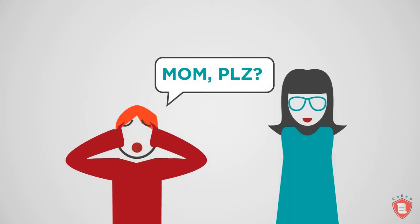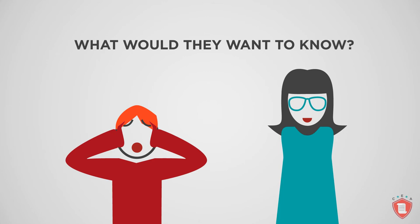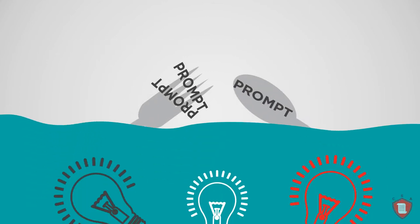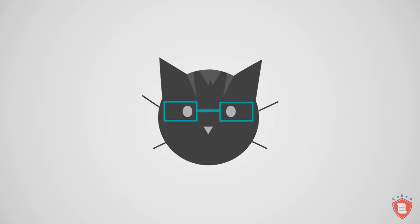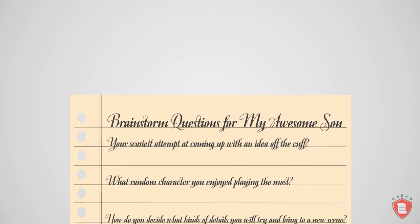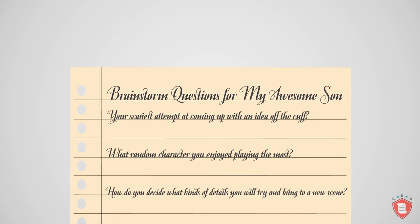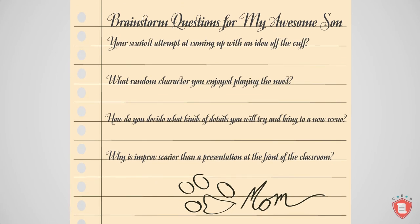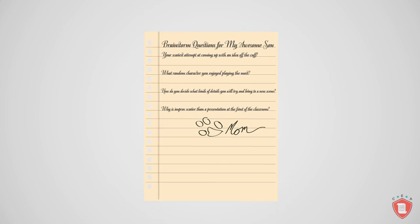Ask for questions. Tell a close friend or family member you trust about your topic and ask him or her to assign you a set of quick interview questions. If this person read an essay about your topic written by you, what would they want to know? Free writing in response to bite-sized prompts is a great way to inspire a new flood of ideas and break through initial free writing trepidation. Make sure to request that whoever asks these questions challenges you to dig for details. You are trying to tell a vivid story that stays interesting for the length of an entire essay. If, for example, you're Grayson writing about your journey through the intimidating world of improv comedy, maybe your mom will ask you about your scariest attempt at coming up with an idea off the cuff. Perhaps she'll ask you what random character you enjoyed playing the most and how you decide what kinds of details you will try to bring to a new scene. Why is improv scarier than a presentation at the front of the classroom? Getting a new perspective in the mix will pose many questions you may not have thought to ask yourself.